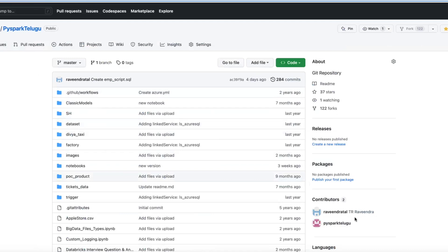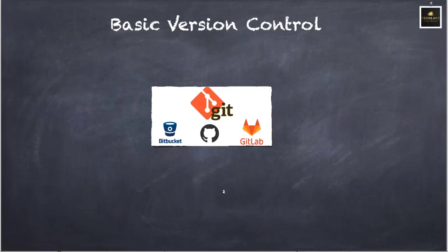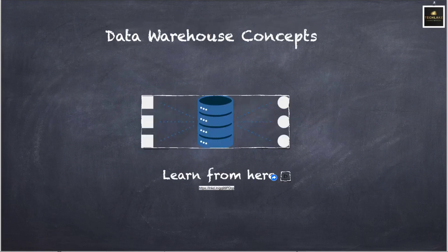The first skill is any Git — follow version control, any version control. Have a GitHub account and go through the document I'll share in the video description. The next one is basic data warehousing concepts. Every developer should have basic data warehousing concepts. I've done a list of videos available in my TechLake YouTube channel — there's a separate playlist for data warehousing concepts.